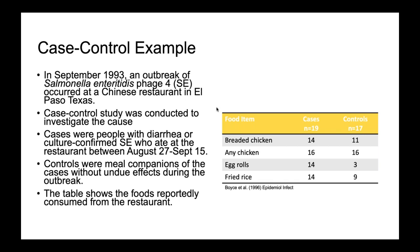Here's our case control example. We always start with our outcome. In September of 1993, an outbreak of Salmonella enteritidis phage 4 occurred at a Chinese restaurant in El Paso, Texas. A case control study was conducted to investigate the cause. Cases were confirmed with diarrhea or culture-confirmed Salmonella enteritidis who ate at the restaurant between August 27th and September 15th. Controls were meal companions of the cases without adverse effects during the outbreak. The table shows the foods reportedly consumed from the restaurant. Which one do you think is going to be associated with the outbreak?